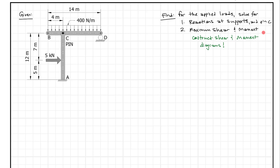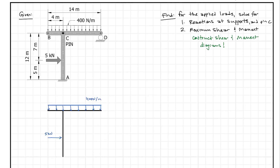To get started, the first thing we're going to do is draw a free body diagram to find our reactions. When I draw my free body diagram, I always start by copying the structure down and eliminating the supports, so I can put those back in as reactions. At D, we have one reaction — a vertical reaction — which we'll call DY.